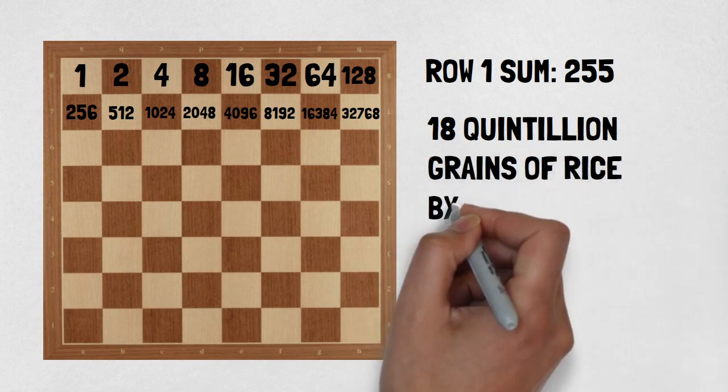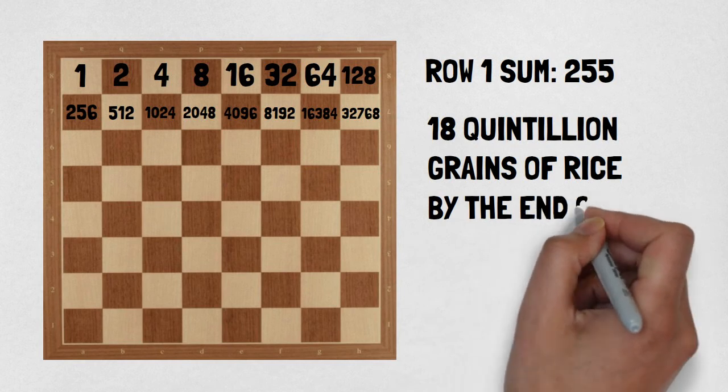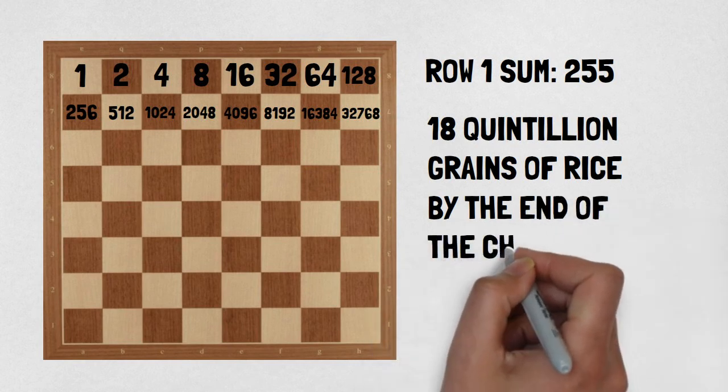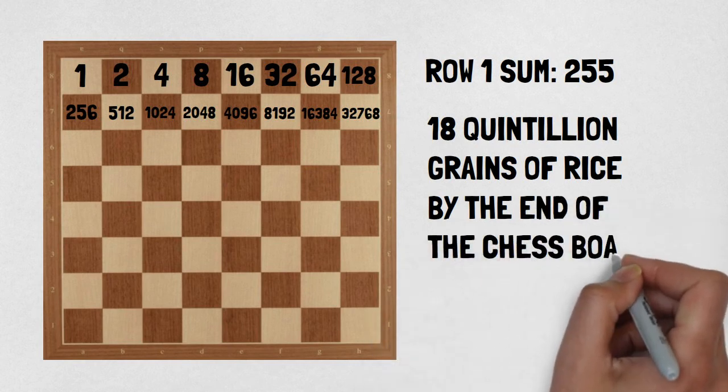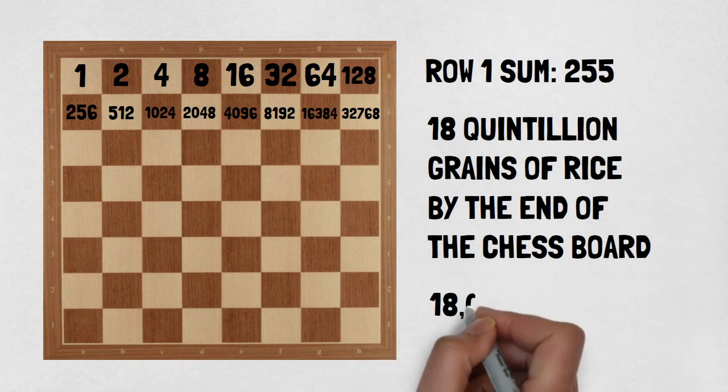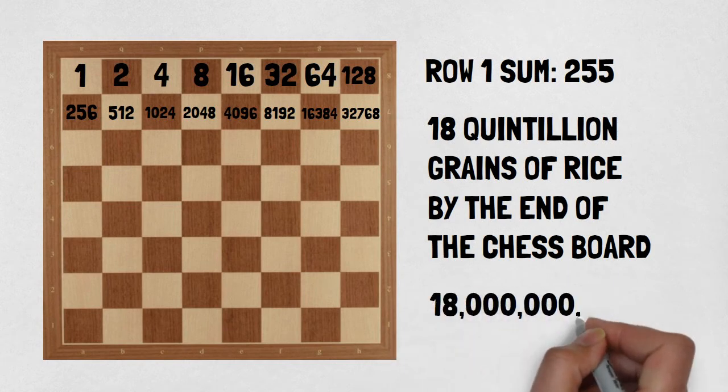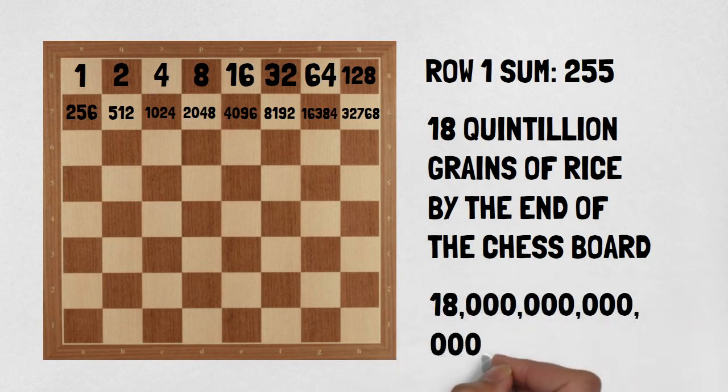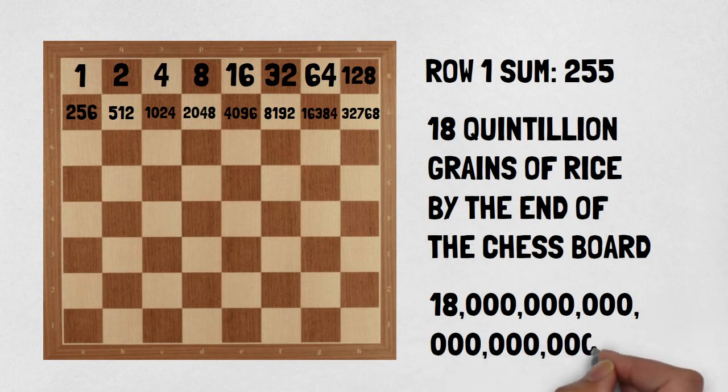This would be equal to about 210 billion tons, and is allegedly sufficient to cover the whole territory of India with a thick layer of rice that is 3 feet tall. The sage knew the king could not pay that much rice, so he told the king to pay it back over time.